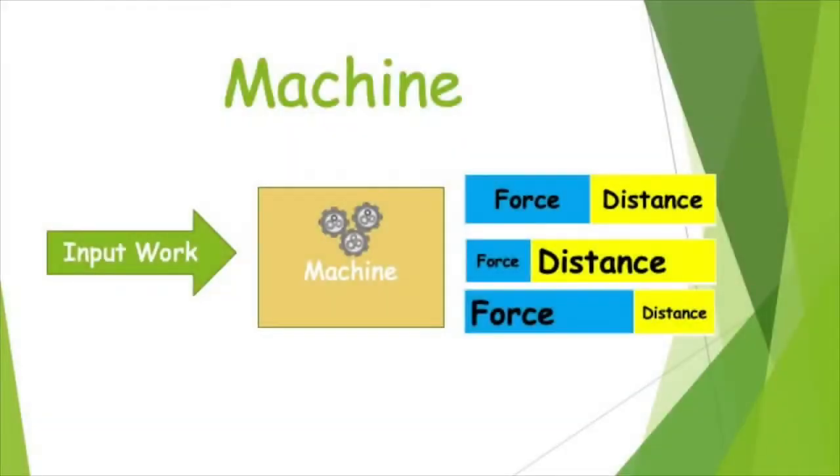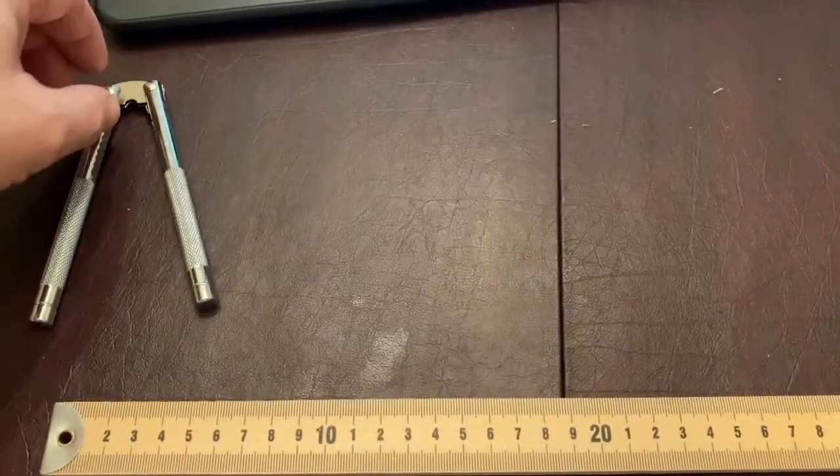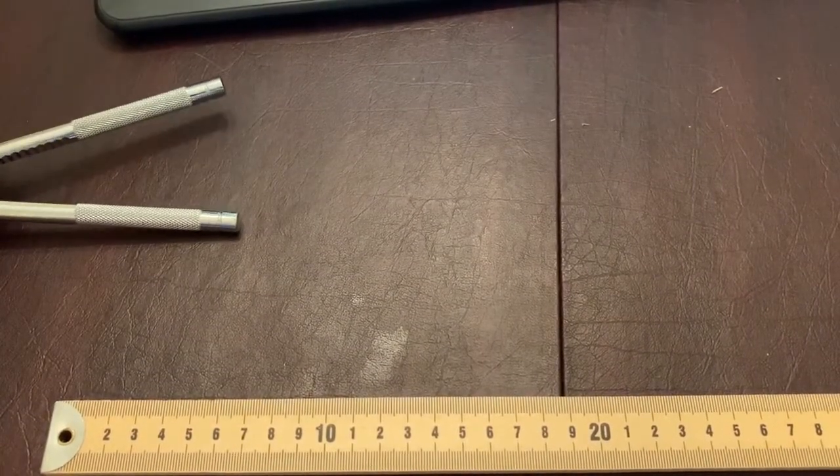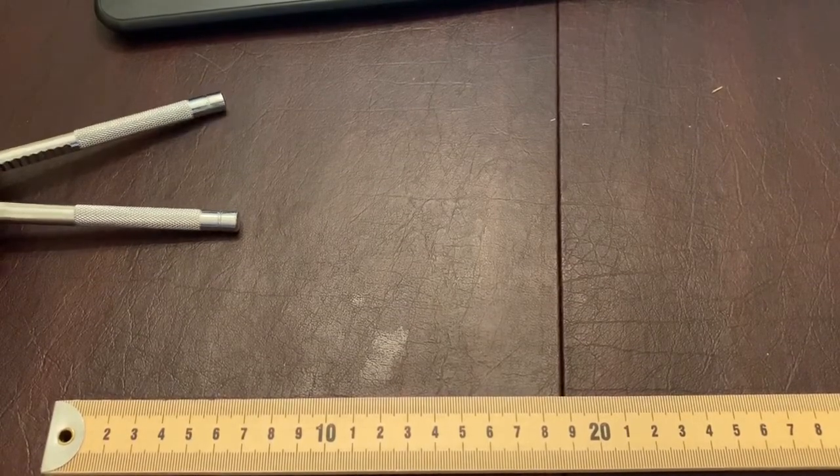Either the force and distance will stay the same, which might be a machine that just changes the direction for something like a single pulley. Or the force can get decreased and the distance gets increased. Or the opposite can happen. The force can get increased and the distance can get decreased. So what do these things look like in example?